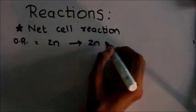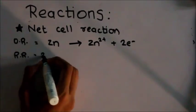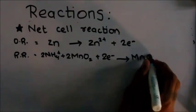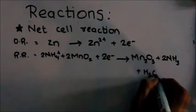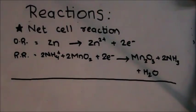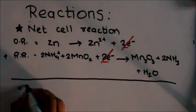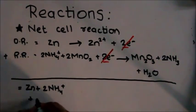The oxidation reaction and the reduction reaction are combined. Now the two electrons are on the opposite sides of the two reactions, so they get cancelled.